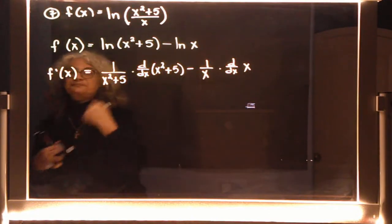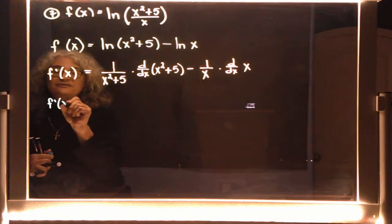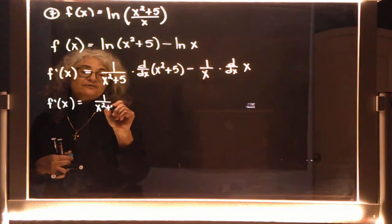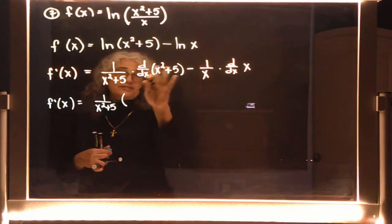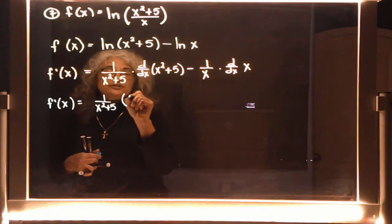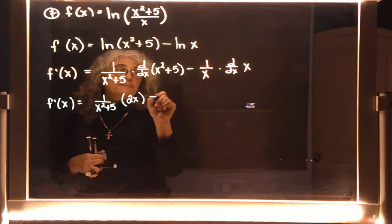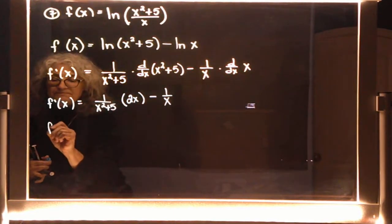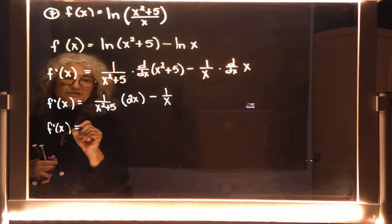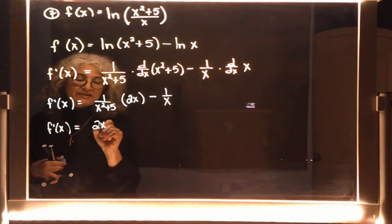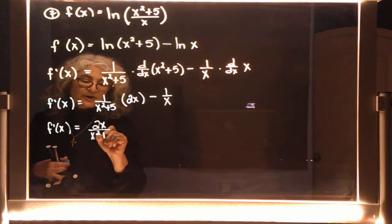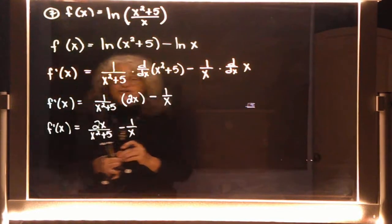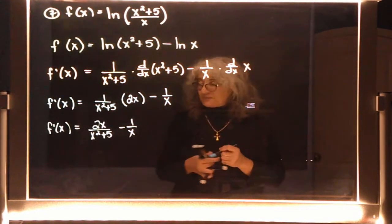The derivative is 1 over (x² + 5) times 2x, minus 1 over x. So far this looks like 2x over (x² + 5) minus 1 over x. Are we done? Almost — but it's not simplified, because it's two separate fractions. To simplify, we need one fraction, which means we need a common denominator.